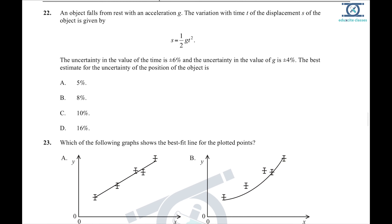Question 22: s = ½gt². The uncertainty in time is 6% and g has a 4% uncertainty. Percentage uncertainty in s = 4% + 2×6% = 4% + 12% = 16%. Option D is the right answer.